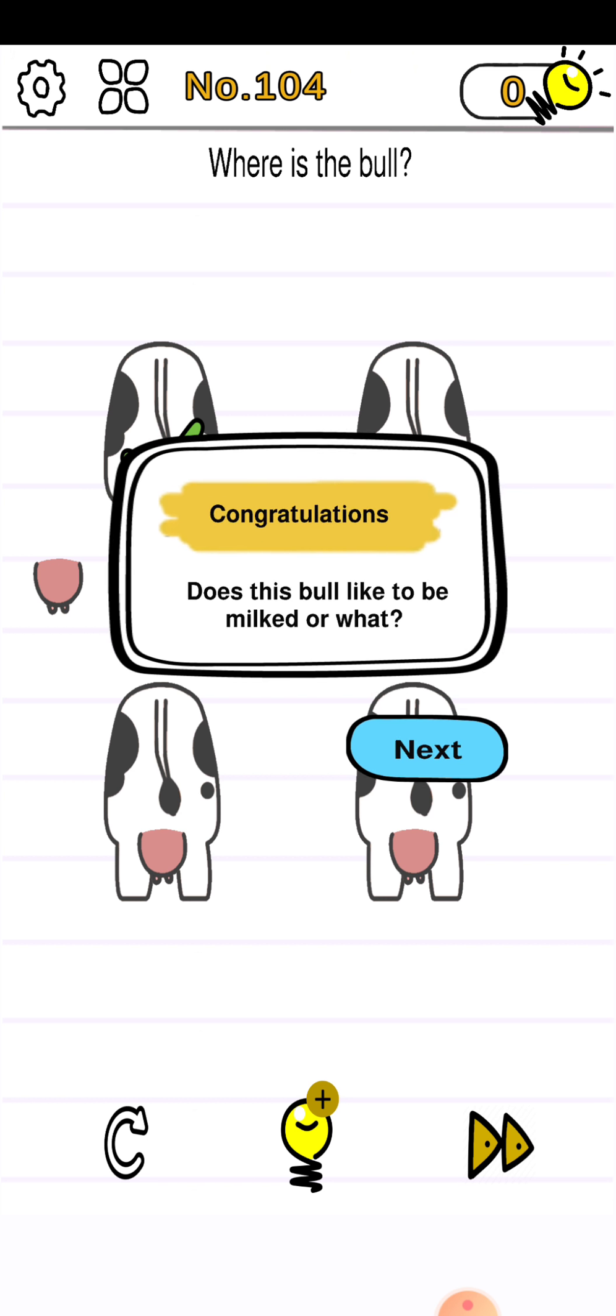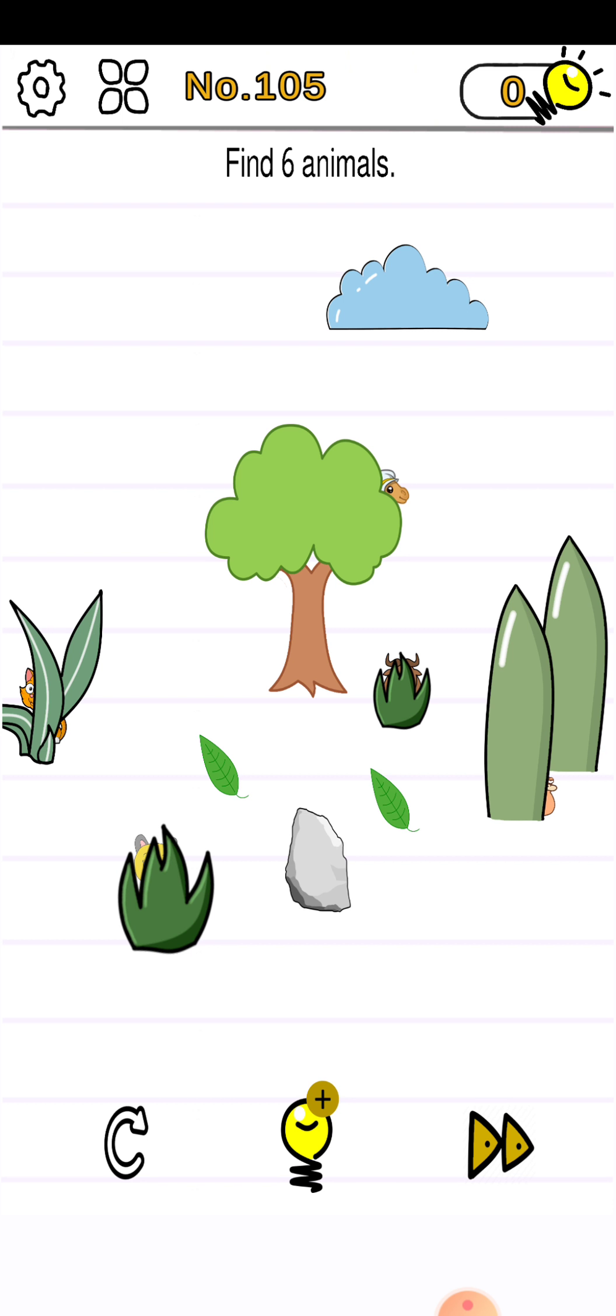So level 105. Find six animals. So one, two, three, four, five is here.